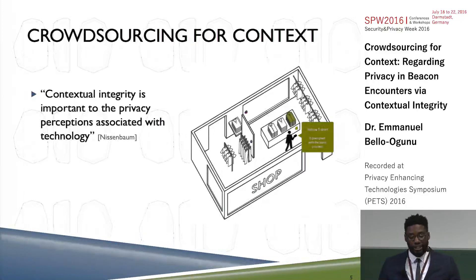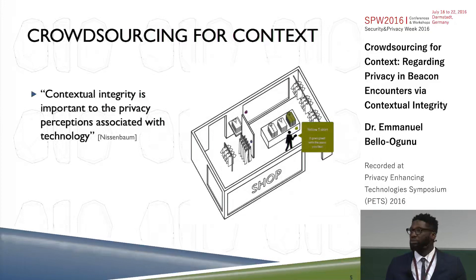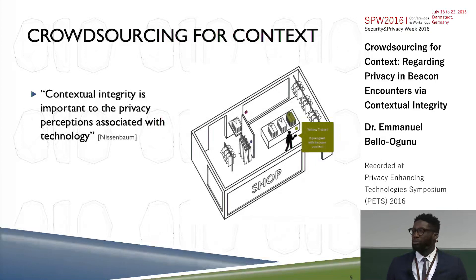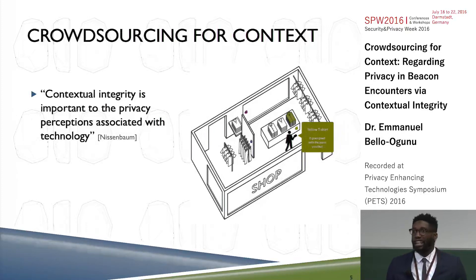We know from research that contextual integrity is important to the privacy perceptions associated with technology. In other words, context matters if I'm going to decide when, where, and with whom I'm going to share some information. One possible solution is to have the beacon providers or the retailers come up with labels — beacon A is associated with shoes, beacon B is associated with t-shirts — and perhaps indicate if a beacon is sensitive. But the issue is that it's hard to expect all beacon providers to abide by some standard for these categorizations, and the notion of privacy that beacon providers would have would likely differ from ordinary users. Naturally they're going to want to collect as much information as possible.